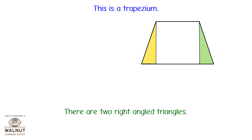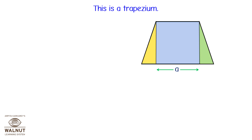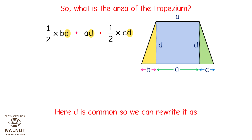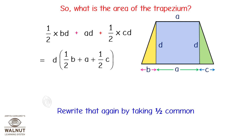There are two right-angled triangles and the central part forms a rectangle. If the length of the shorter parallel side is a, then the length of the corresponding part of the other side is also a. Let the distance between the parallel lines be d, so these two sides of the rectangle are d. Let one outer part of the base be c and the other be b. The area of the trapezium equals half into b into d plus a into d plus half into c into d. Since d is common, we can rewrite it as d into (half b plus a plus half c).